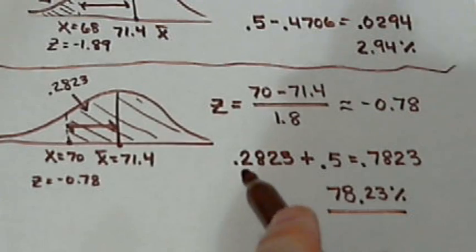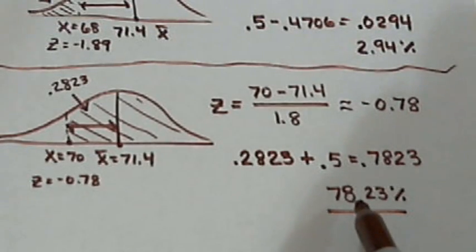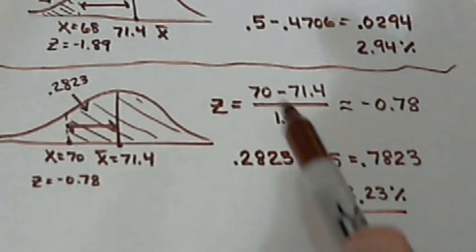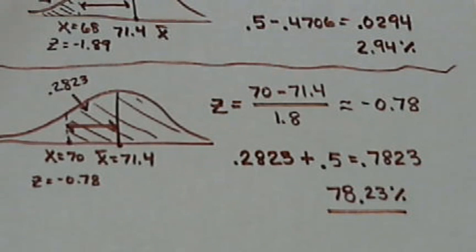So this tells us that a little over 78% of the golfers are going to shoot above 70 at this course.